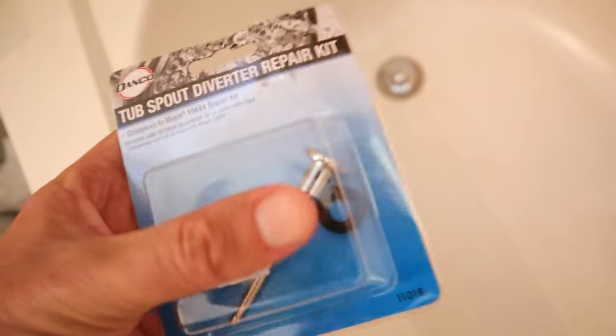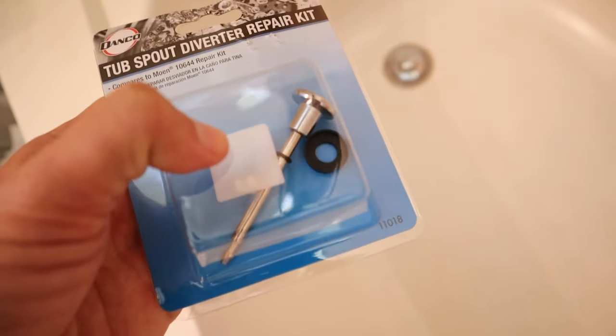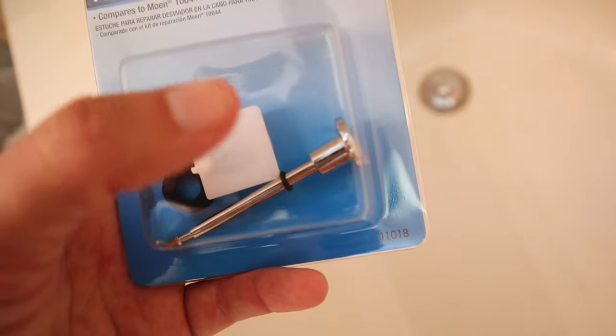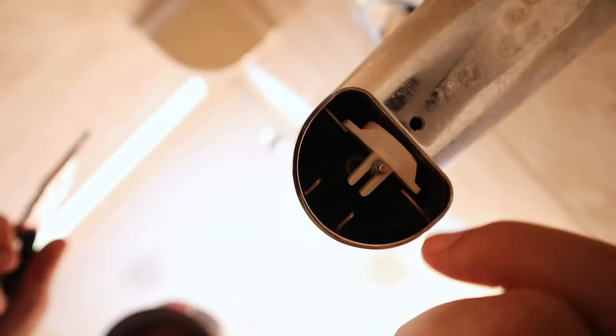Now it does come with everything. You can see that rubber seal that's inside. There's the new gate. And it also comes with a new lift rod. But I'm going to attempt to make the old one work just because we like the way it looks better.